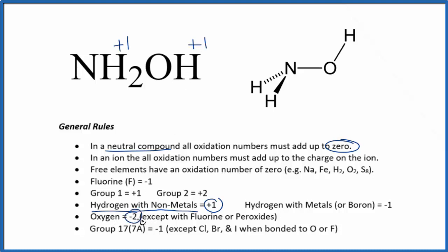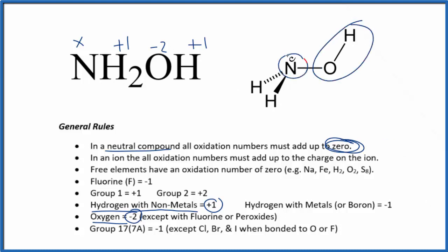For oxygen, that's going to be minus two almost all the time, so here it's minus two. We don't know the nitrogen yet, but we have all the information we need because everything will add up to zero. The reason it's written as NH₂OH — if you look at the structure, you'll see this OH group bonded to the nitrogen, and then these two hydrogens are over here.